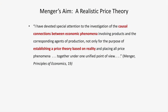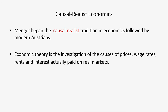Right in his book, what Menger is interested in doing is forming a theory of price based on observed reality. He was also interested in unifying economics — not separating use value from exchange value, but explaining exchange value based on use value. He started a tradition called the causal realist tradition, which focused on the realistic causes of value. He would define economics as the investigation of the causes of prices, wages, rents, and interest that are actually paid on real markets.